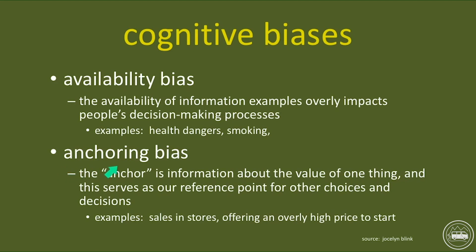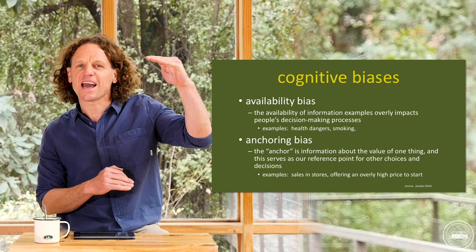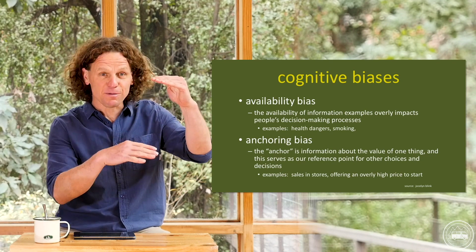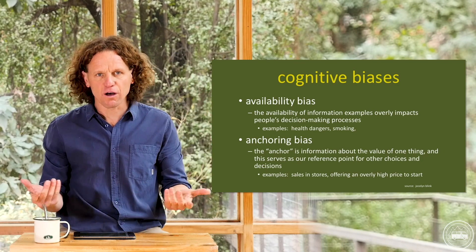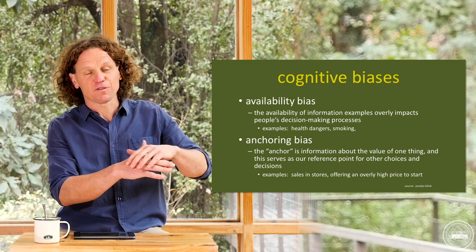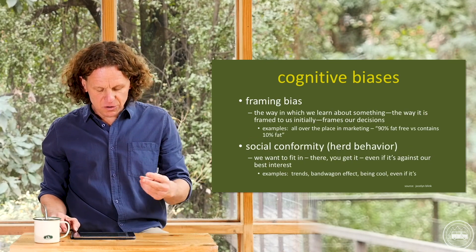Anchoring bias — an anchor is something that keeps us in place, like a boat anchor. In this context, the anchor is information about the value of something that serves as a reference point for all our decisions around it. A classic example: stores offer a higher price and then discount it, so you think you're getting a deal. If they want ten dollars for a shirt, they might list it at twenty dollars and say it's fifty percent off. They got the price they wanted, but they anchored you at the higher price. We all fall victim to this because we don't really know the true price of things.